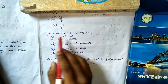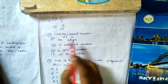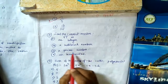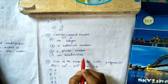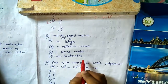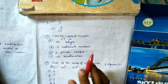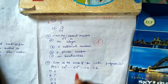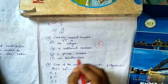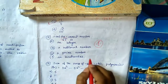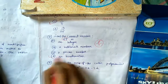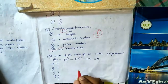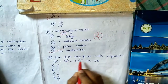Question number two: is root 7 an integer, a rational number, a prime number, or an irrational number? If a number cannot be expressed in the form p by q, it is irrational. We cannot express root 7 in the form p by q, therefore root 7 is an irrational number.